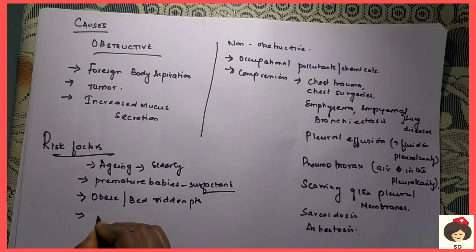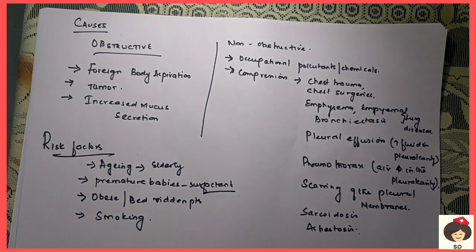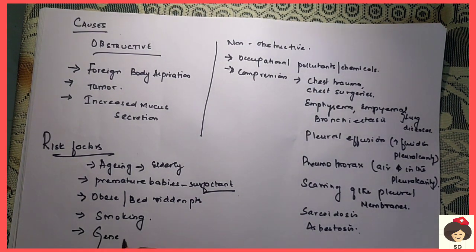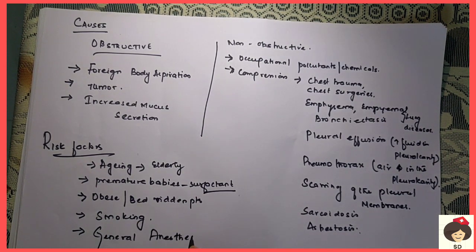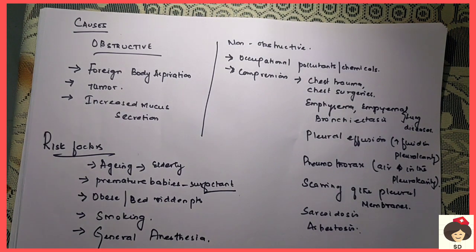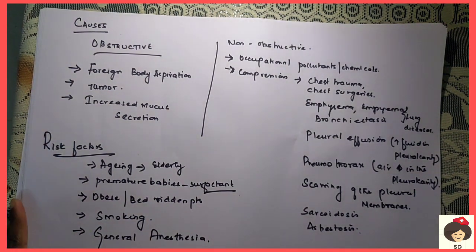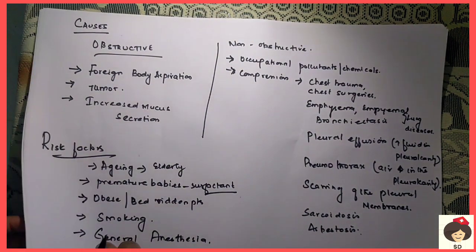Smoking is also a risk factor — it is a chemical that can accumulate in the alveolar spaces, forming scarring or staining so the alveoli cannot inflate and deflate. One major risk factor is general anesthesia: when a patient undergoes any surgery, we give general anesthesia and the patient's lung functioning is done by a ventilator. When the person is rising from general anesthesia, the alveoli cannot suddenly accommodate to the change, and thereby can go for Atelectasis.